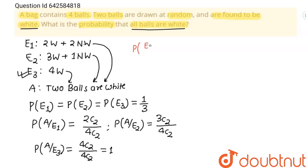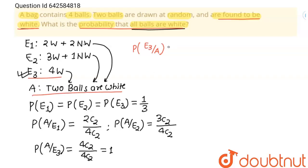We have to find P(E3|A) — the probability that all balls are white given that two balls drawn were found to be white. By Bayes' theorem, this equals P(A|E3) times P(E3) in the numerator.